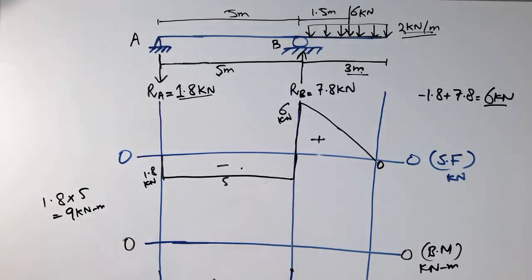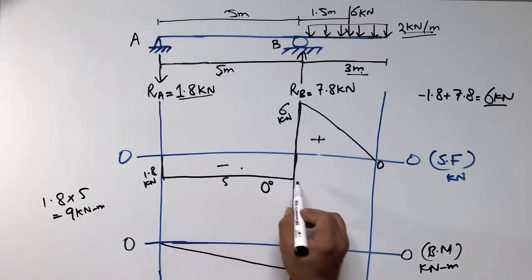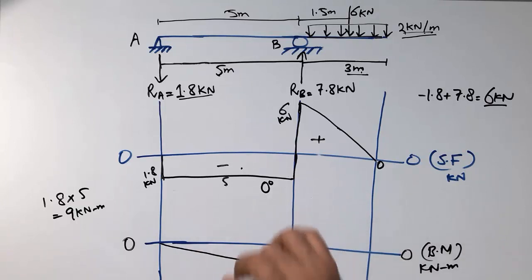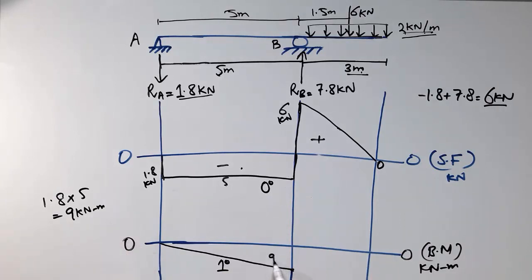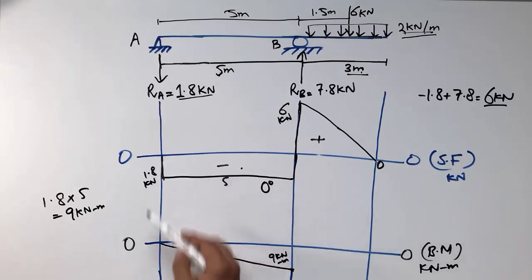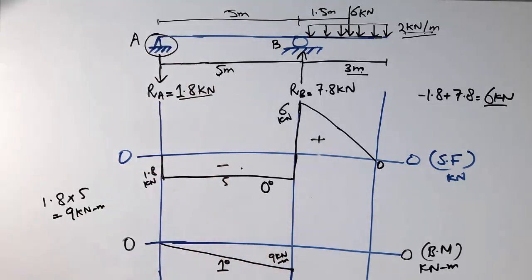This negative area means the bending moment acts in the downward direction from the reference line. The bending moment diagram should be one degree higher than the shear force diagram — since the shear force is constant (0-degree line), the bending moment is a linear (1-degree) line. At support A the moment is 0, and at support B it is −9 kN·m.